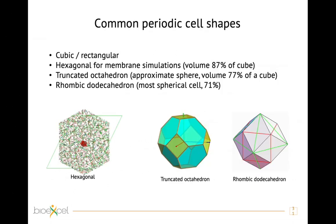How do we define our box? The most standard choice is a cubic-rectangular box. However, a limitation of the cubic box is that it can have corners very far away from a globular protein. Since most macromolecular proteins are globular, those corners would be filled with excess solvent, meaning too many interactions to calculate, slowing down the calculation without providing extra information.